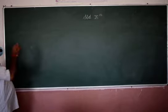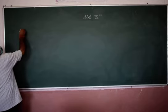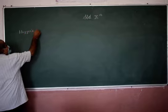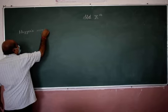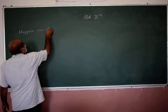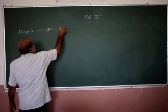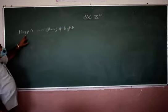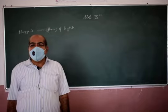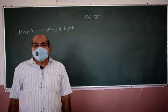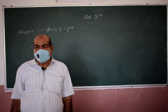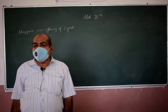Huygens' wave theory of light was then developed. According to Huygens' wave theory of light, light propagates in the form of waves. Waves are emitted from the source of light, and the waves travel in a straight line.